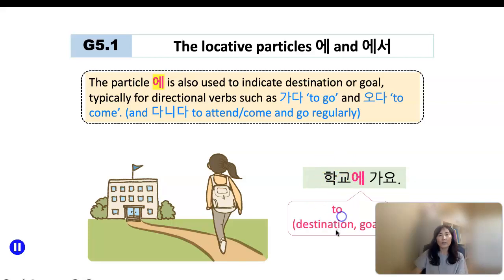학교에 가요. So as you can see here, 에 is attached to a place with the verb, the directional verb 가요, 오다. And it's more like an English-compatible preposition like to - go somewhere, 학교에 가요.